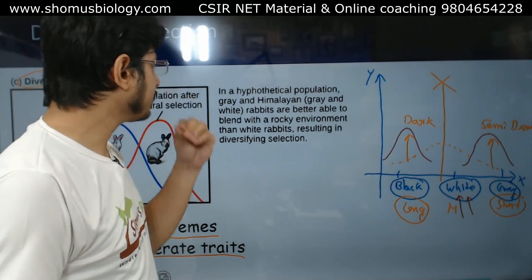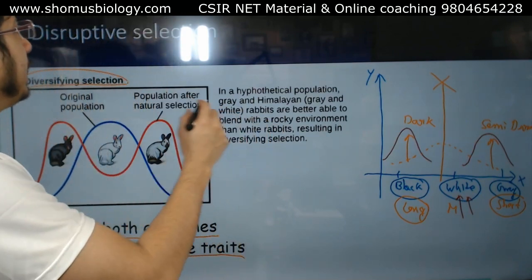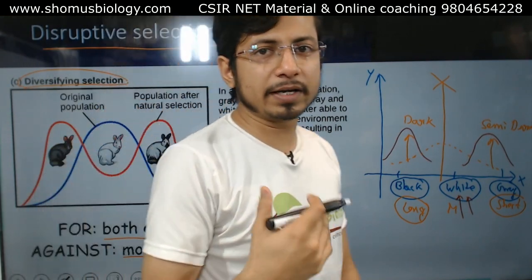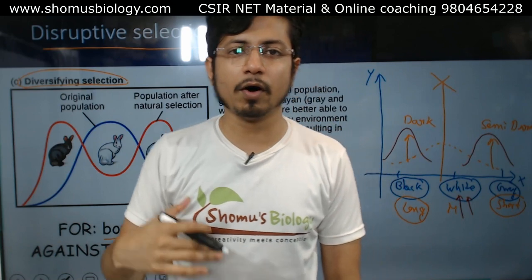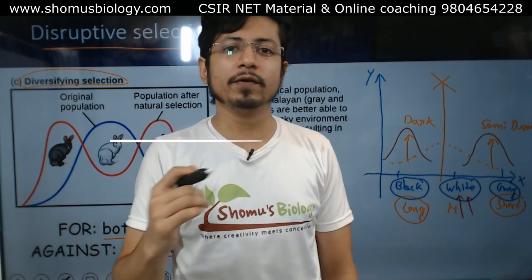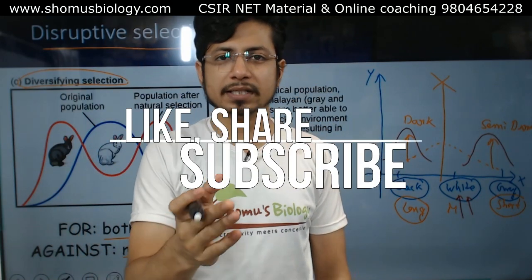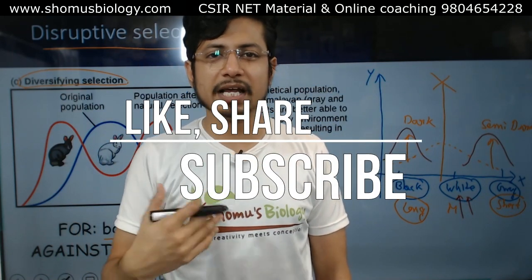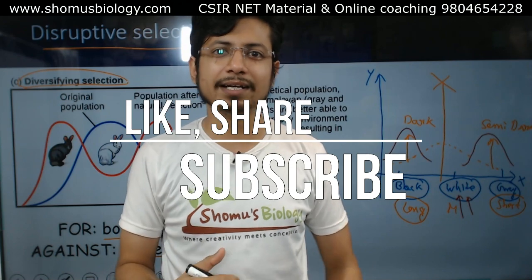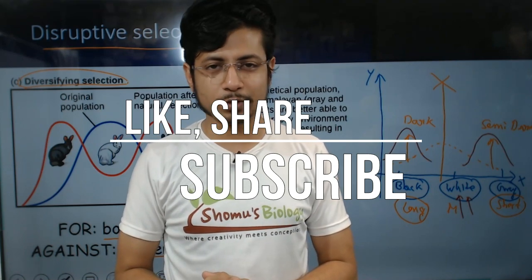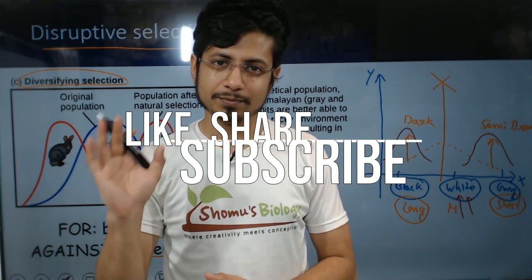So this is the idea about disruptive selection — the moderate character is disrupted and the extreme traits are selected. I believe you have a clear understanding of what disruptive selection is. If you like this video, please hit the like button, share it with your friends, and subscribe to our channel to get more videos like this in the future. Thank you. Bye.